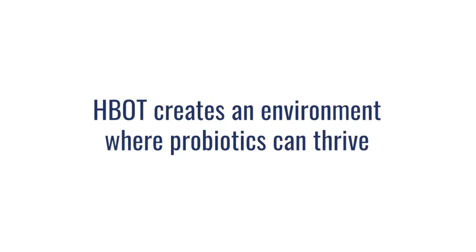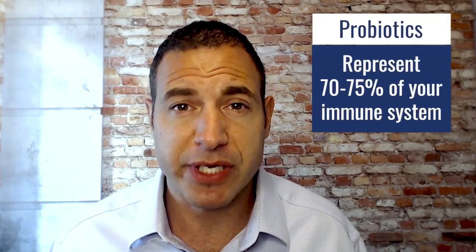Most of your probiotics — the good healthy bacteria that live in your body — are either aerobic, meaning they love oxygen, or at least oxygen tolerant, meaning they're happy to live in either a low or high oxygen environment. As the high oxygen environment suppresses pathogens and anaerobic bacteria, it also creates an environment that helps probiotics really be healthy and thrive. Probiotics, the good bacteria, make up close to 70–75% of your immune system, so creating a healthy environment for them also improves their capacity to help protect you.